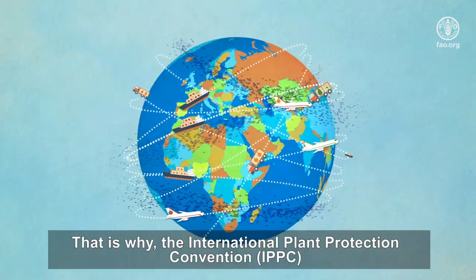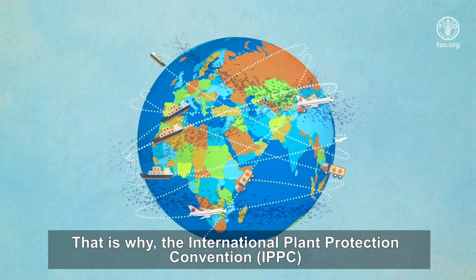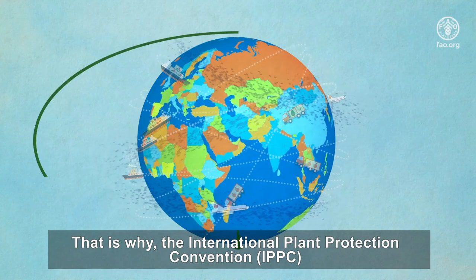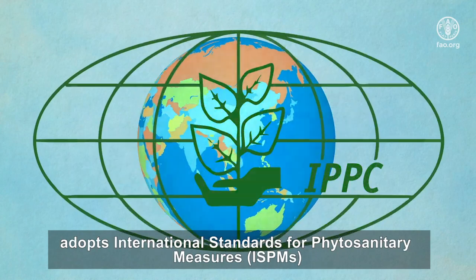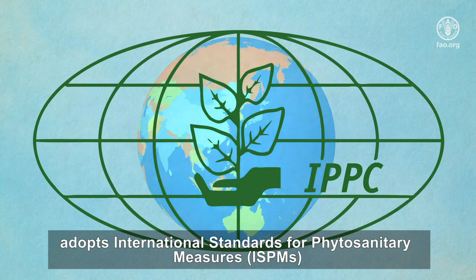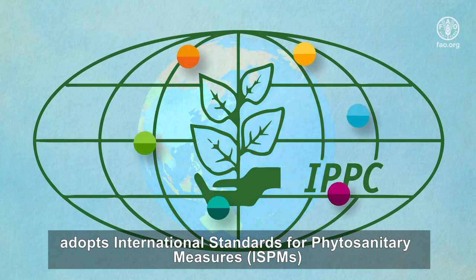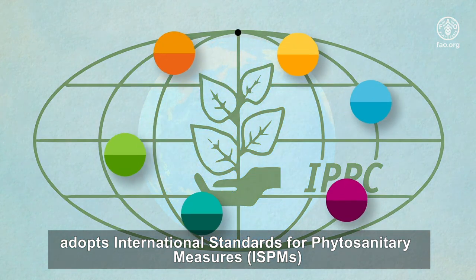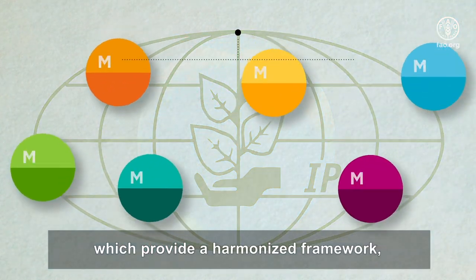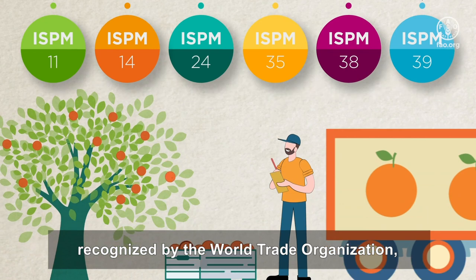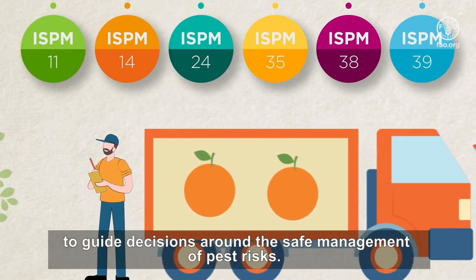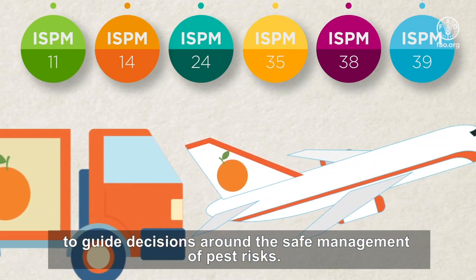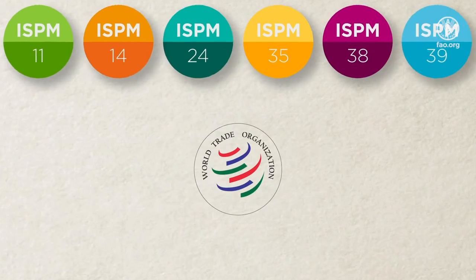That is why the International Plant Protection Convention adopts international standards for phytosanitary measures, ISPMs, which provide a harmonized framework, recognized by the World Trade Organization, to guide decisions around the safe management of pest risks.